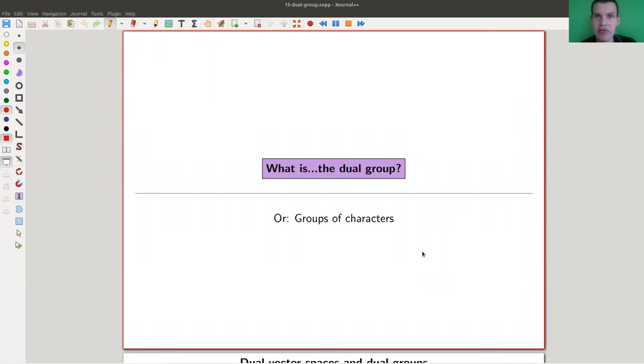Okay, welcome everyone to my continuation of what is representation theory. Today I would like to tell you about the group structure on characters or kind of dual group. We will see what that actually means, like a dual vector space, a dual group. And this will play a role in the next video which is about Fourier analysis on groups, which is kind of a fun topic with a lot of applications.